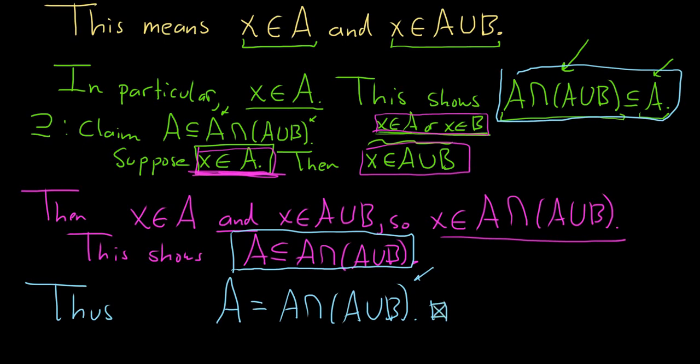So when you're showing two sets are equal, you just show that they are subsets of each other. I hope this proof has been helpful. It kind of went into a little bit of extra detail. So hopefully it made sense. That's it.